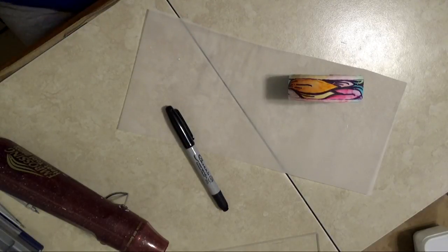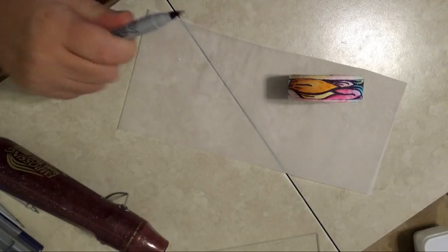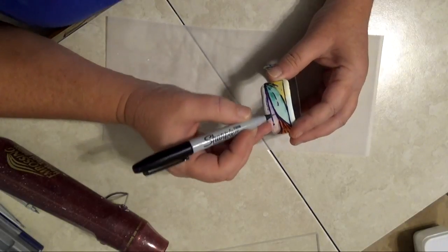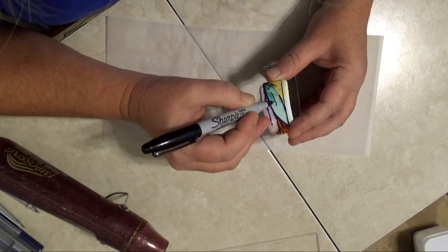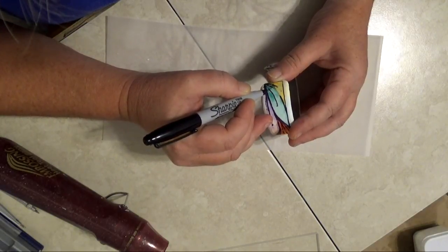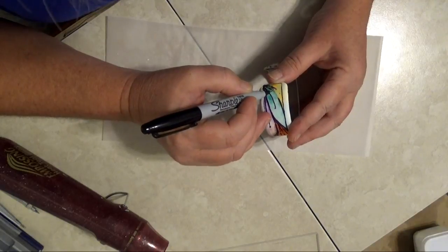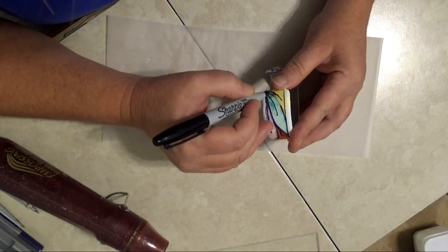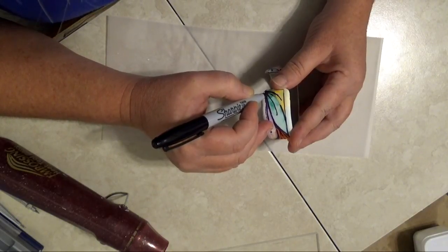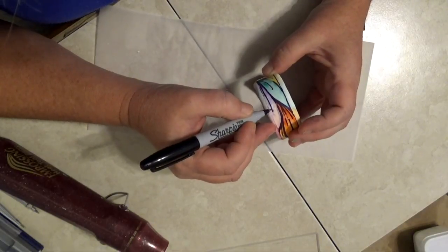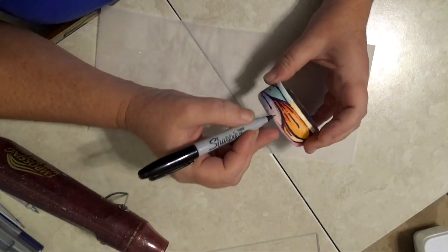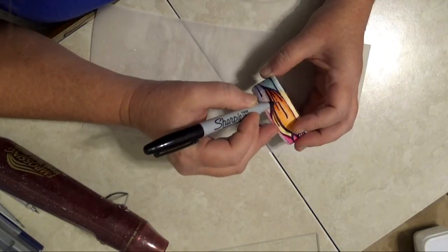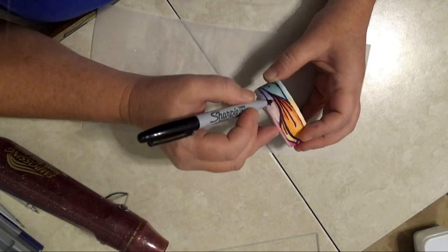If you'd like, after you've got all the colors heat set, you can come back in with the Sharpie marker and you can touch up wherever the ink didn't transfer. How much and how little of this you do is really up to you. There's a lot of this that I would just leave alone, but there are some places where I think it's just a little too much.